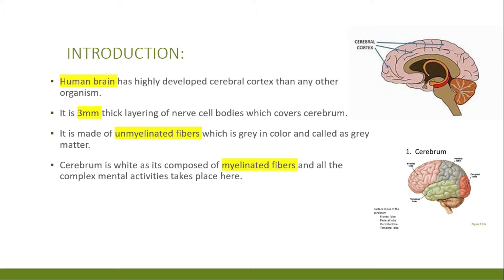The cerebral cortex is also composed of myelinated axons, which is why its appearance is white. This region is where complex mental activities take place.